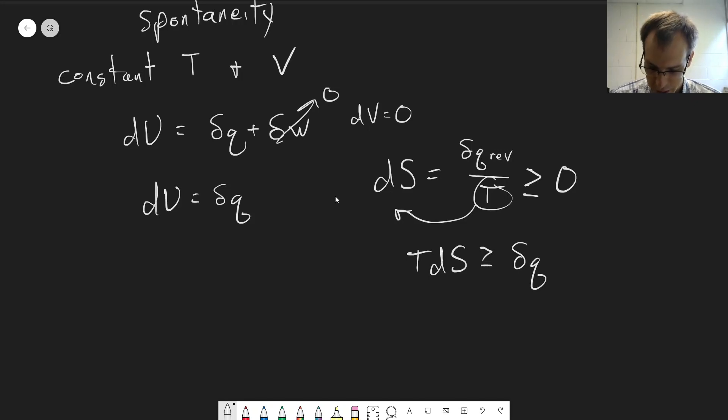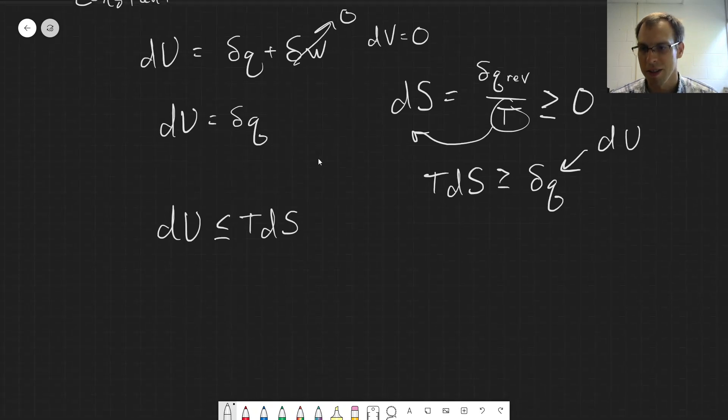So we can say then that dU has to be less than or equal to TdS, because dU is equal to dq. So we're just substituting dU in here, and then just write the equation backwards.